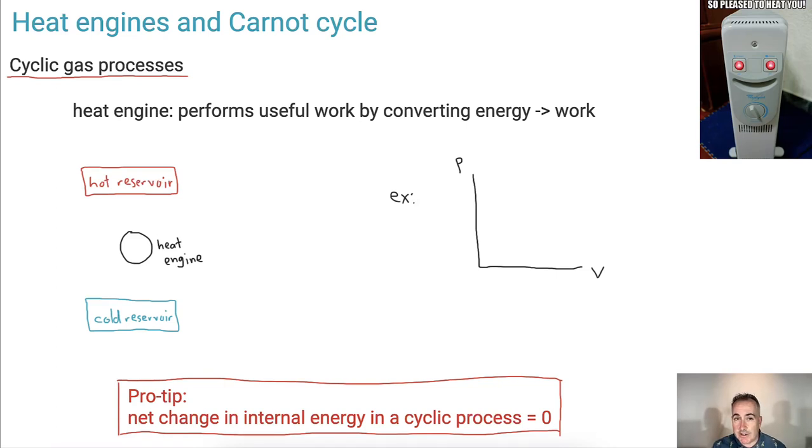In this video, we're going to be looking at heat engines and the Carnot cycle, as well as the efficiency of each of them. But this man here looks so pleased to heat you. It looks like he's smiling. Alright, so let's look at this. We have a heat engine, which is a cyclic gas process, which means it's something that continues in a cycle. It keeps repeating itself, like something happens in a car motor, for example, as a cyclic heat engine. So it performs useful work by converting energy to work. This is the idea.